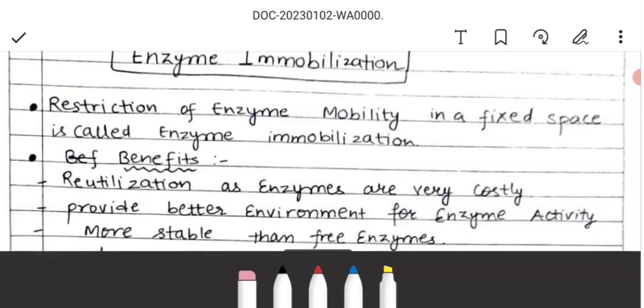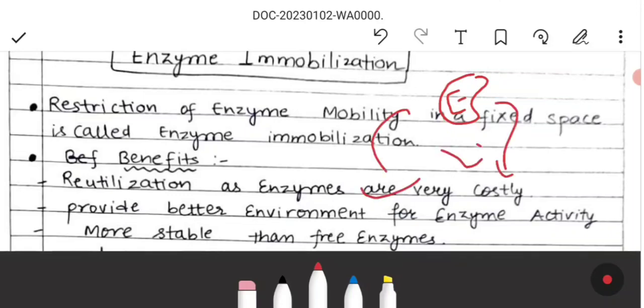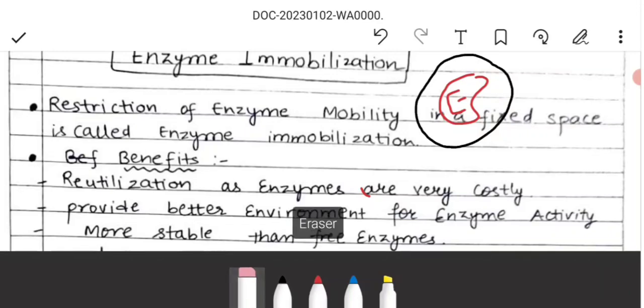So suppose this is an enzyme. Now the enzyme can freely go there because it is free. Now we will close it into a coverage. Now what will happen? Now it will not move. This is an immobilized enzyme. We have restricted the movement in a fixed space and it is called enzyme immobilization.